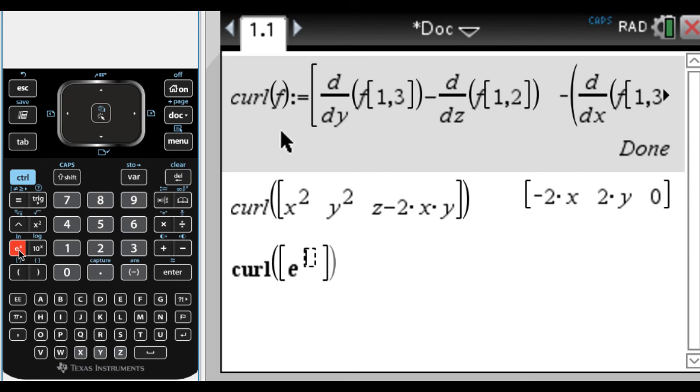Okay, here we go. E to the x. E to the x, cosine of y, plus, now it's y times z, comma, x times z, minus e to the x, sine of y, comma, x times y, plus z.